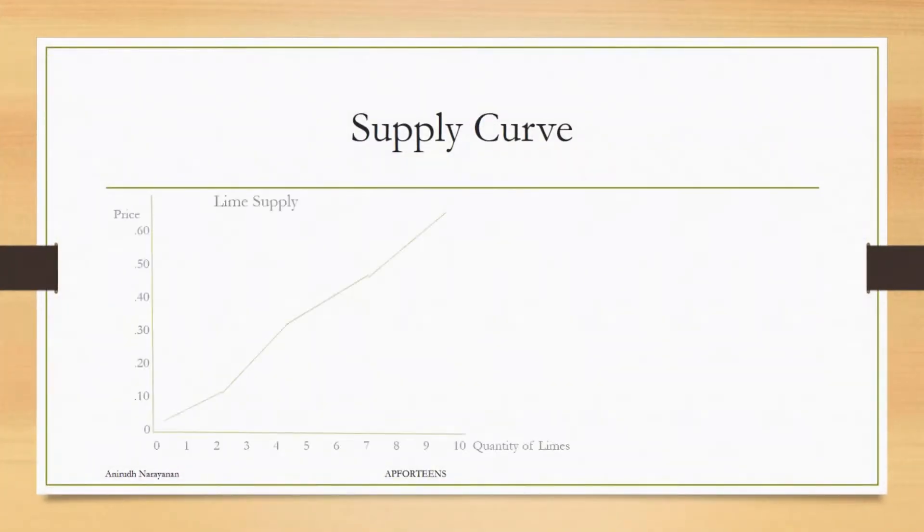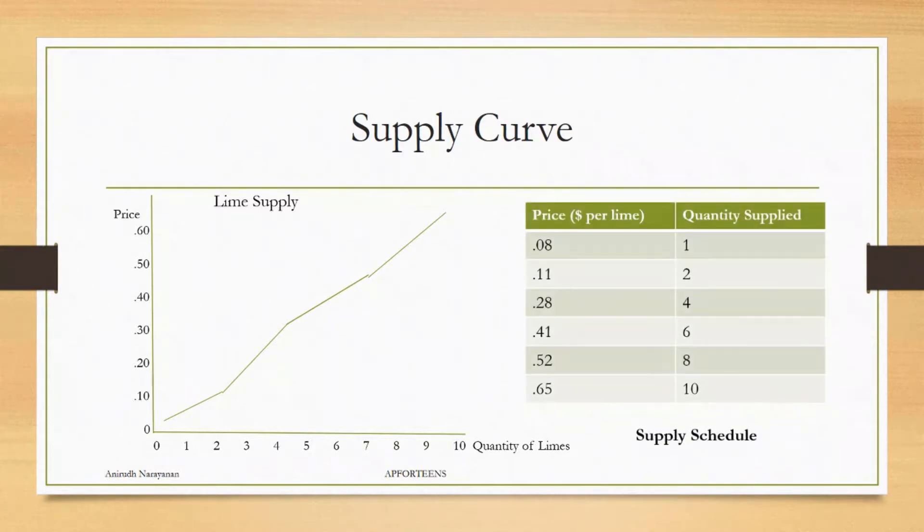Now, the supply curve kind of looks like this, with the price on one side and the quantity of the product supplied on the other. In this case, we'll talk about limes, since we talked about that last time. Now, normally, it's a straight curve, like you see here. But for the purposes of this example, we're going to use the crooked lines that you see here for this particular supply schedule.